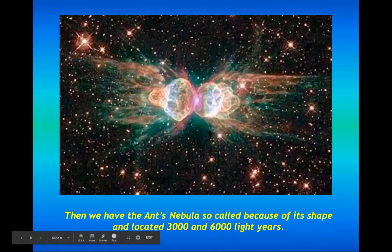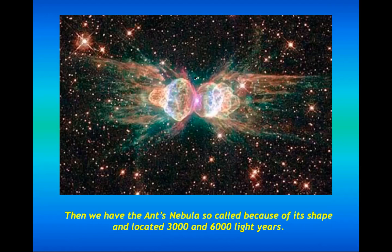Next we have the Ant Nebula, so-called because of its shape, located 3,000 to 6,000 light years away. A nebula is basically a cloud of dust and particles. All that you can see here are clouds — nebula — dust or particles. When hit by light, they reflect and reach our eyes or telescope. And it shapes like an ant.